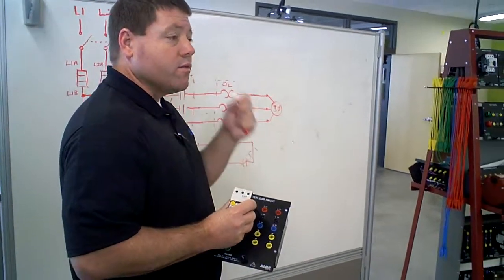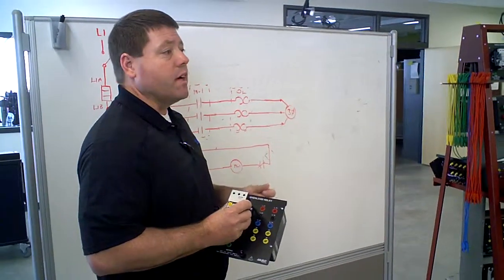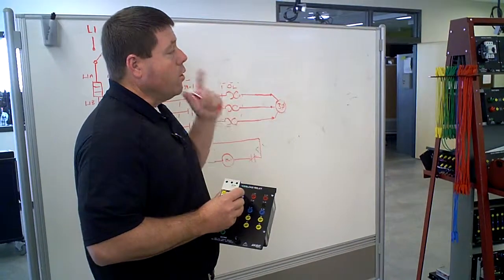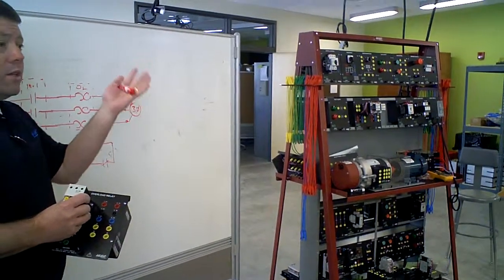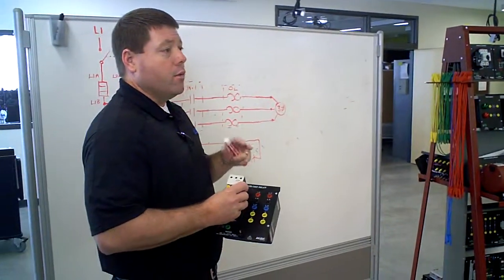It has to be a sustained current above that ratio. That instantaneous starting current is very quick. It dissipates very fast once the motor starts running.